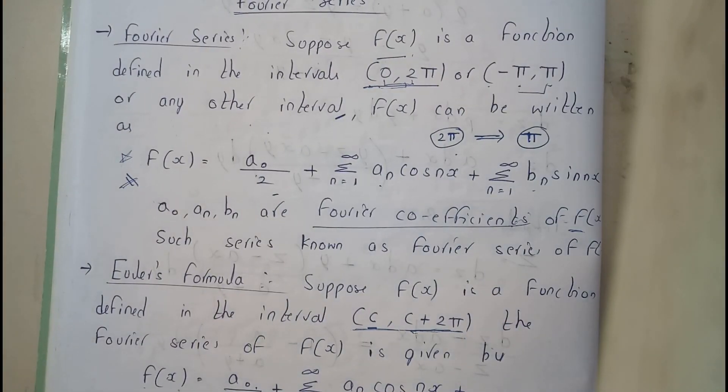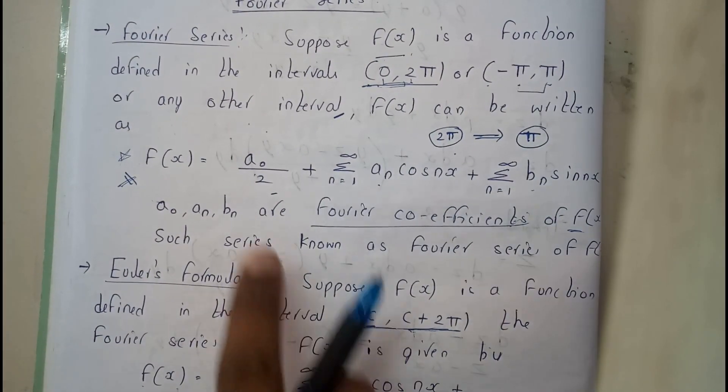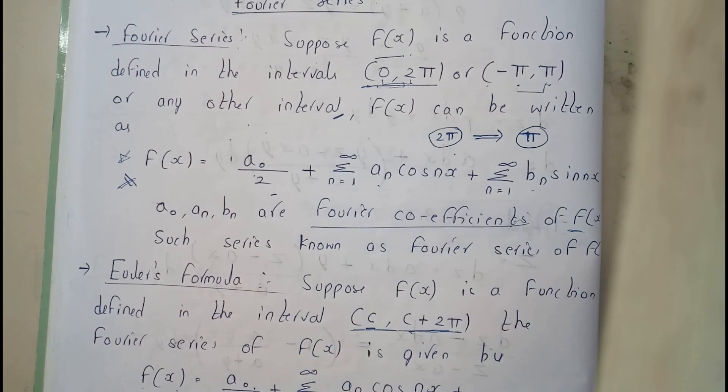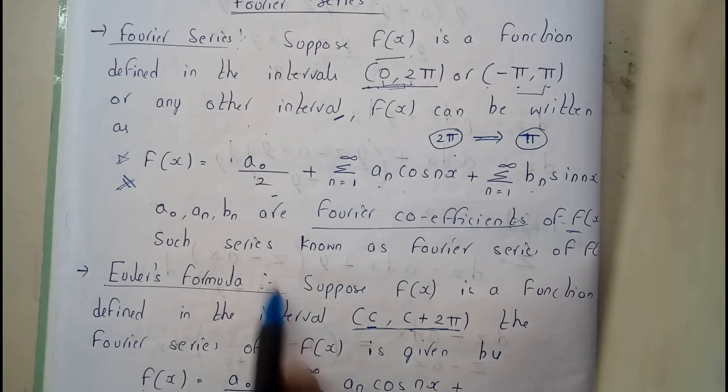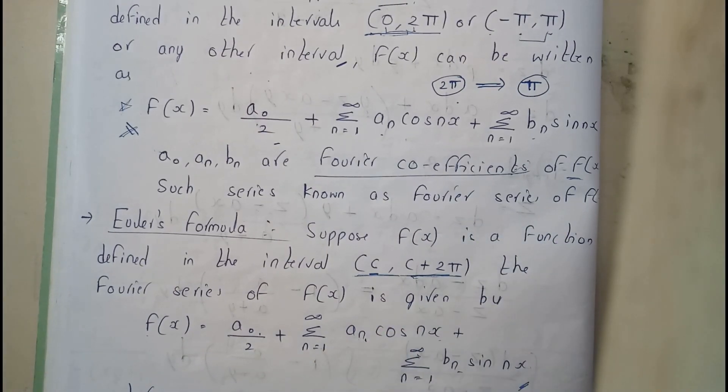You may ask me what does this a₀, aₙ, and bₙ refer to. Those are nothing but Fourier coefficients of the equation or expression f(x). Such series is known as Fourier series of f(x).